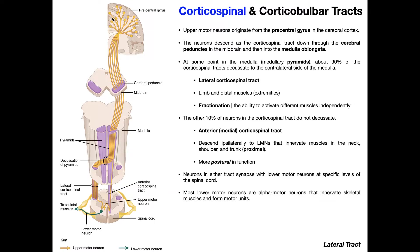They all have axons, and the axons descend downward from the motor cortex down through the cerebrum. They're ultimately going to pass through the thalamus and then descend downward into the brain stem. The brain stem has three components from superior to inferior: we have the midbrain shown here in cross-section, then the pons, and then the most inferior part, shown in another cross-section, is the medulla oblongata. As these upper motor neurons descend through the midbrain, they're moving through the anterior part of the midbrain through a structure called the cerebral peduncles.